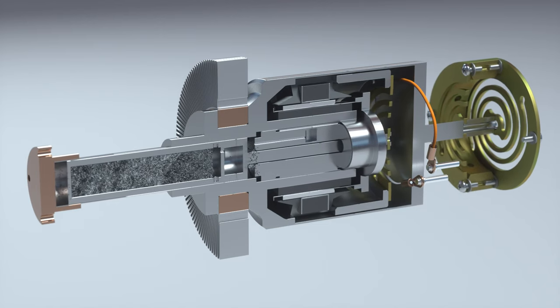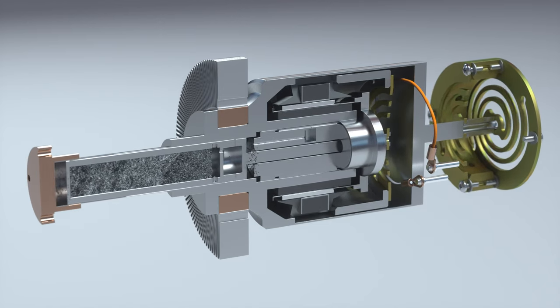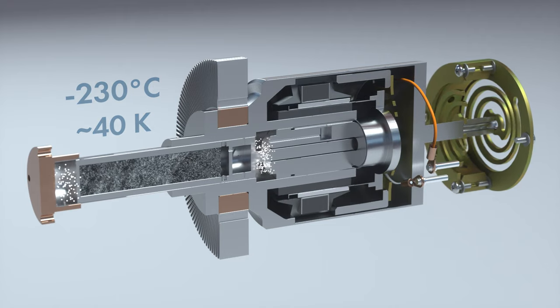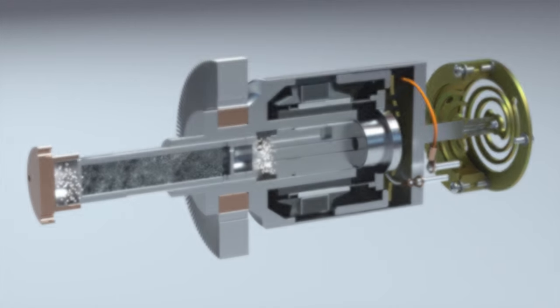Since this cycle occurs 60 times per second, the net effect is that the temperature of the cold tip drops to negative 230 degrees Celsius, or 40 Kelvin, giving SunPower Cryotel cryocoolers a wide range of applications.